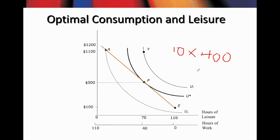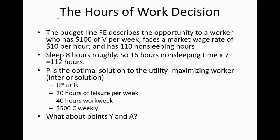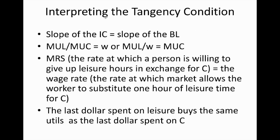What we learn here from neoclassical theory is that when deciding how many hours to work, we use indifference curve analysis and budget constraint to identify the tangency point, because that tangency point gives us the optimal consumption and leisure combination for the worker. This is a very important rule derived from this analysis, and this is where we find our point P.